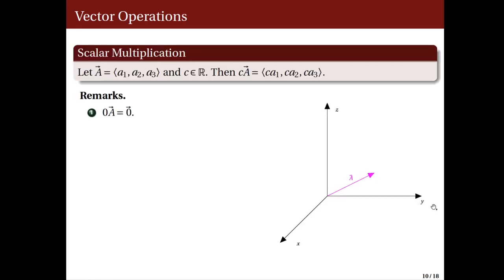We begin with scalar multiplication. We let a be a vector with components a1, a2, a3, and c be a real number — we will also call c a scalar. Then the product of the scalar c with the vector a is the vector with components c·a1, c·a2, c·a3. You can think of scalar multiplication as multiplying each component of the vector by the same scalar c.